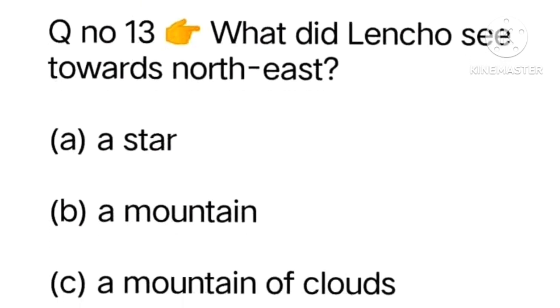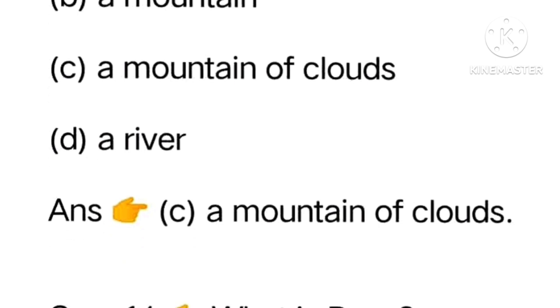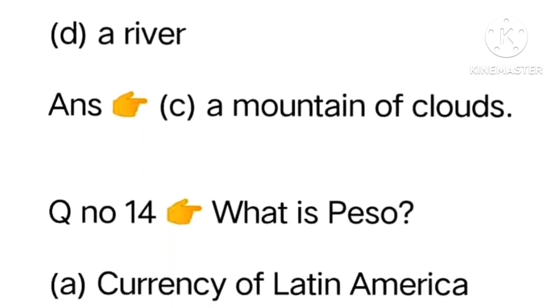Question thirteen: What did Lencho see towards North East? A star, a mountain, a mountain of clouds, or a river. The answer is a mountain of clouds.